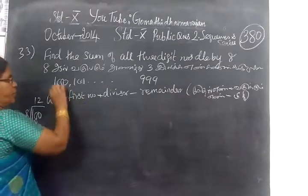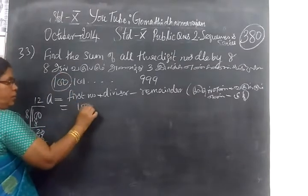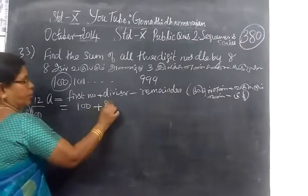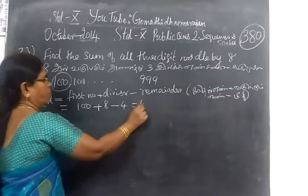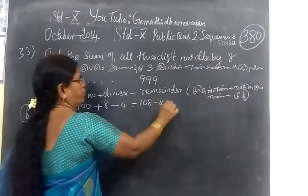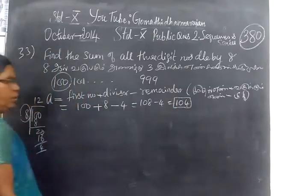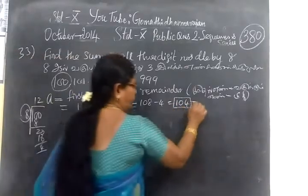So a equal to first number. Minus plus divisor 8 minus remainder. Remainder is 4. So 100 plus 8 minus 4 equal to 104. This is the value of a.